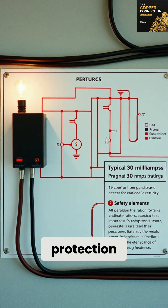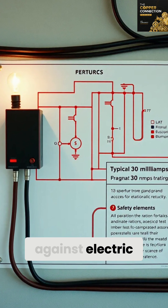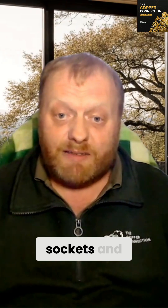An RCD detects an imbalance between the live and neutral, which indicates a leakage to earth, causing it to trip rapidly. Typical ratings are 30 milliamps for additional protection against electric shocks for sockets and many final circuits, or 100 milliamps and 300 milliamps often used for fire protection.